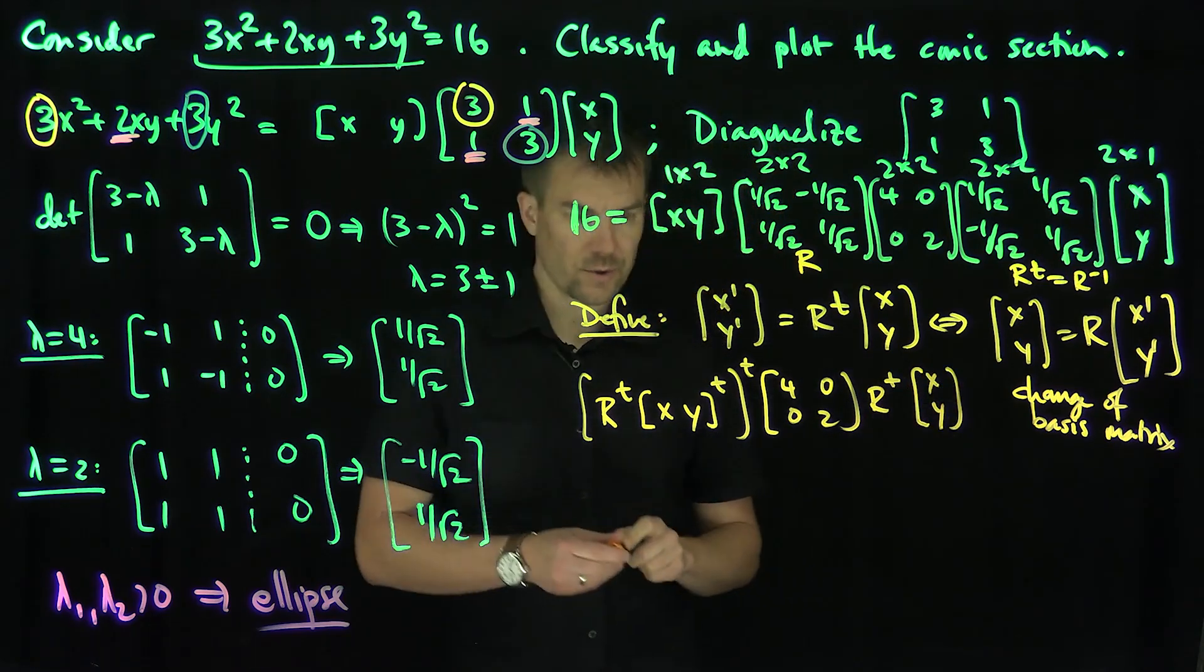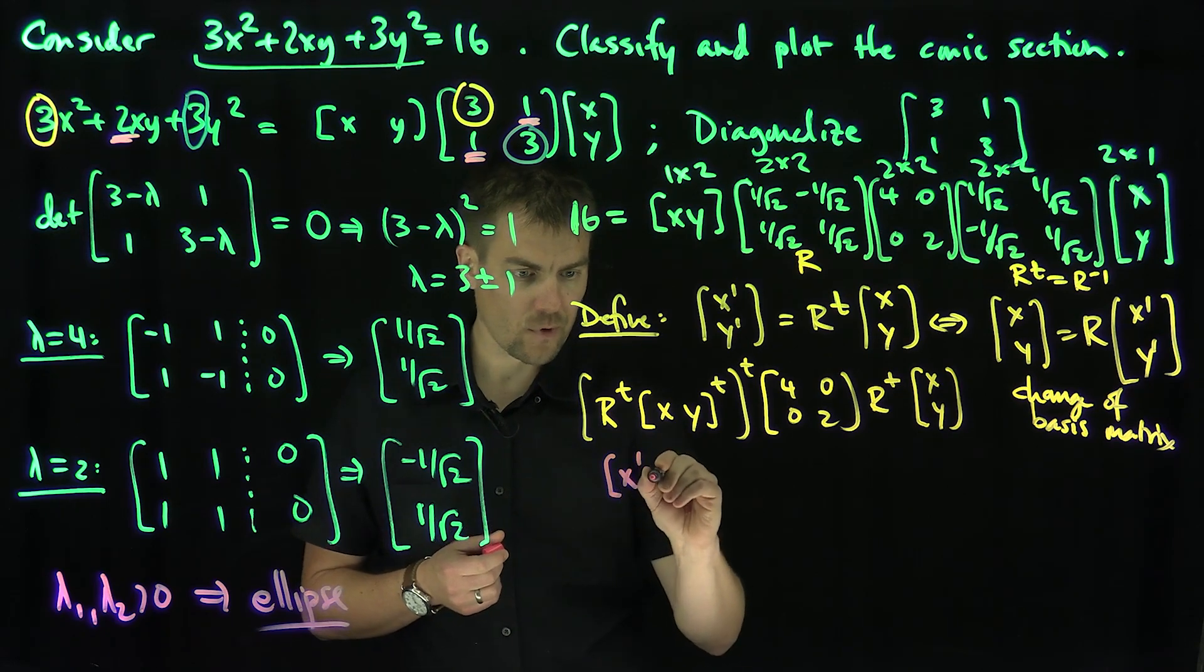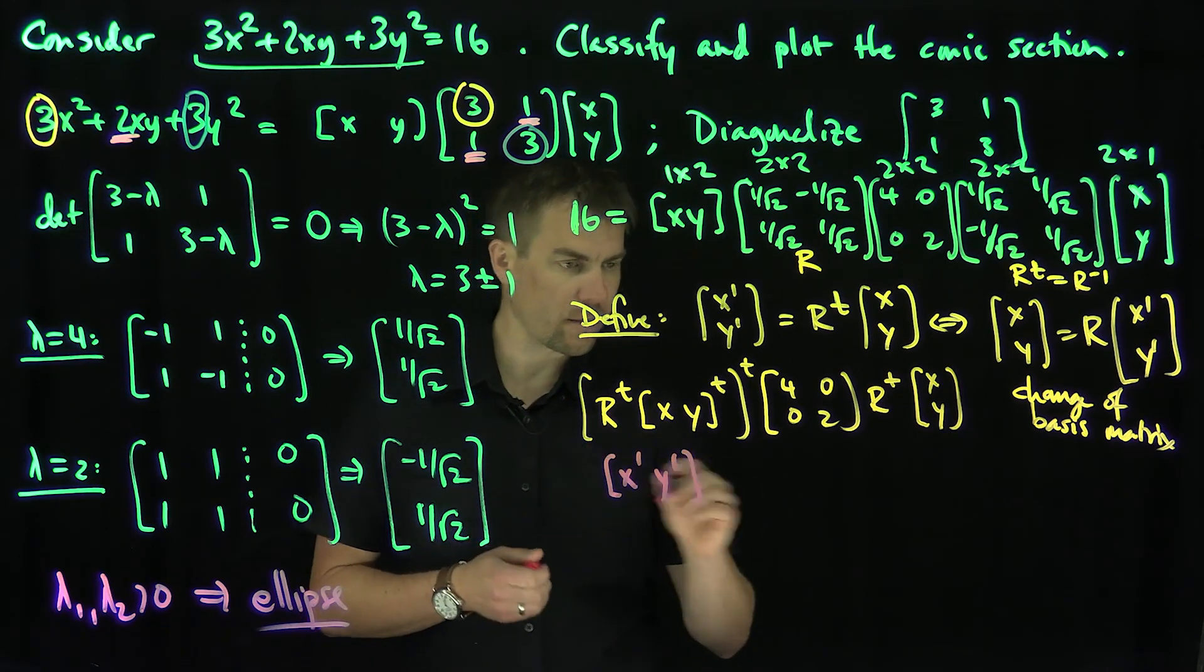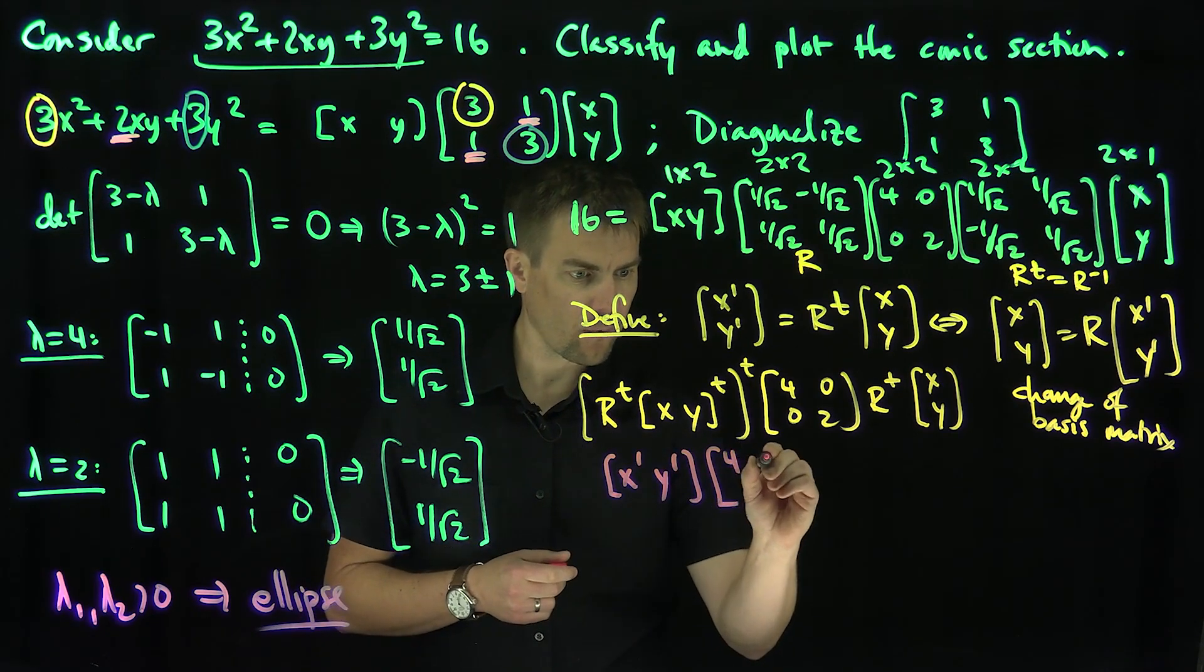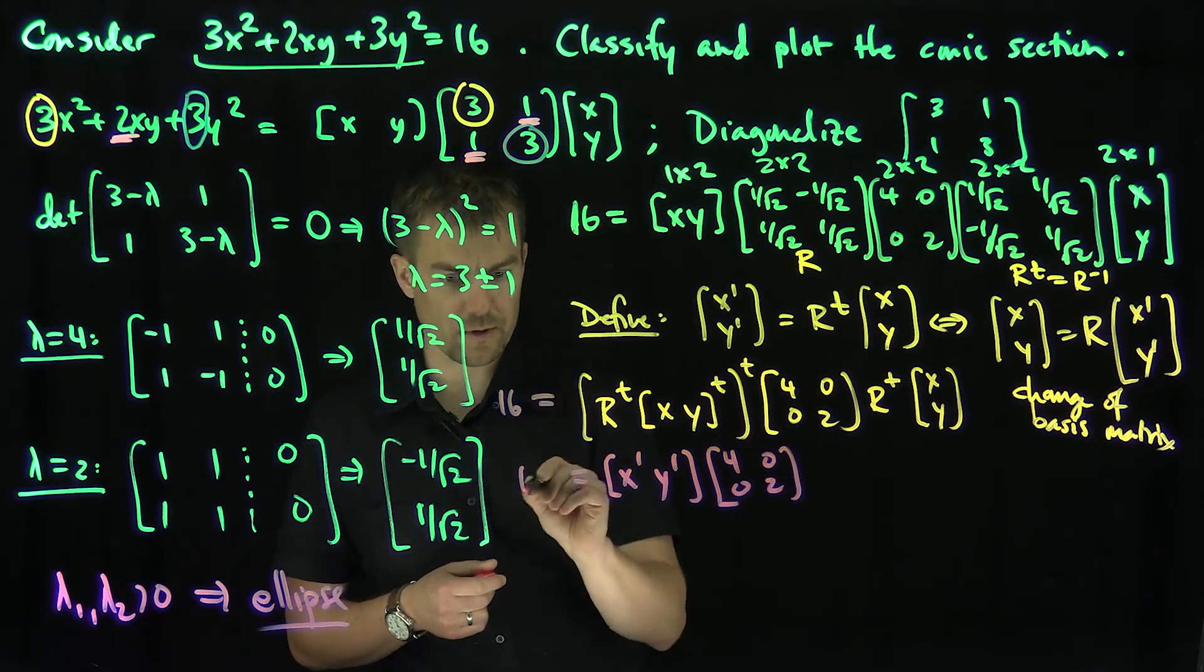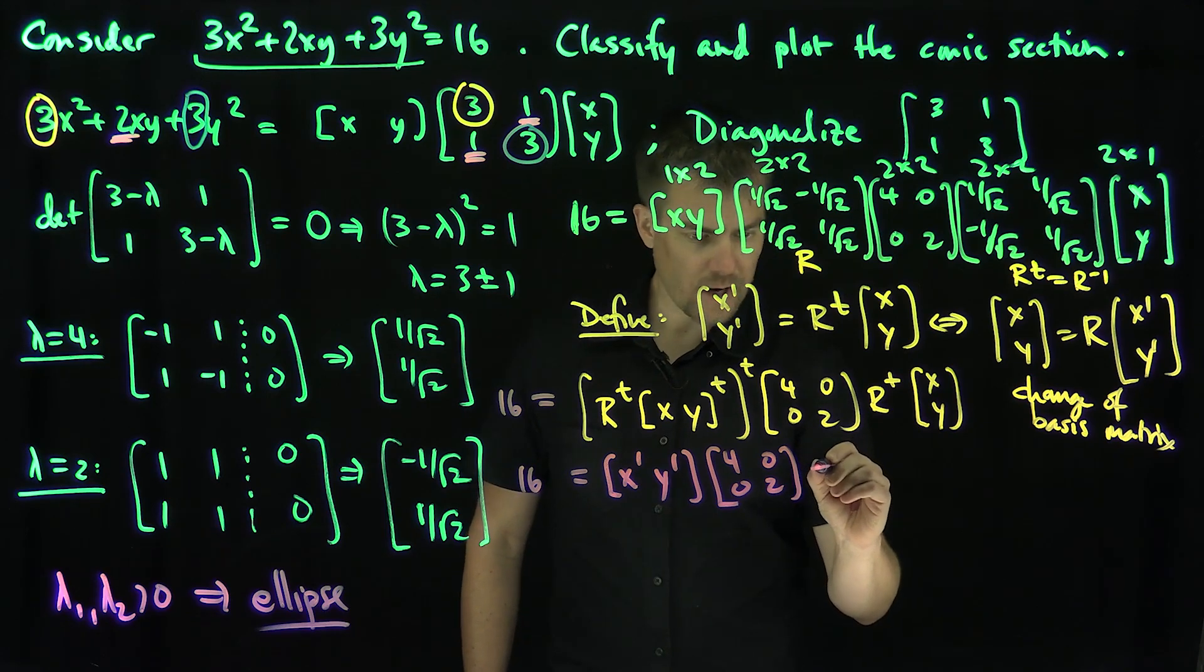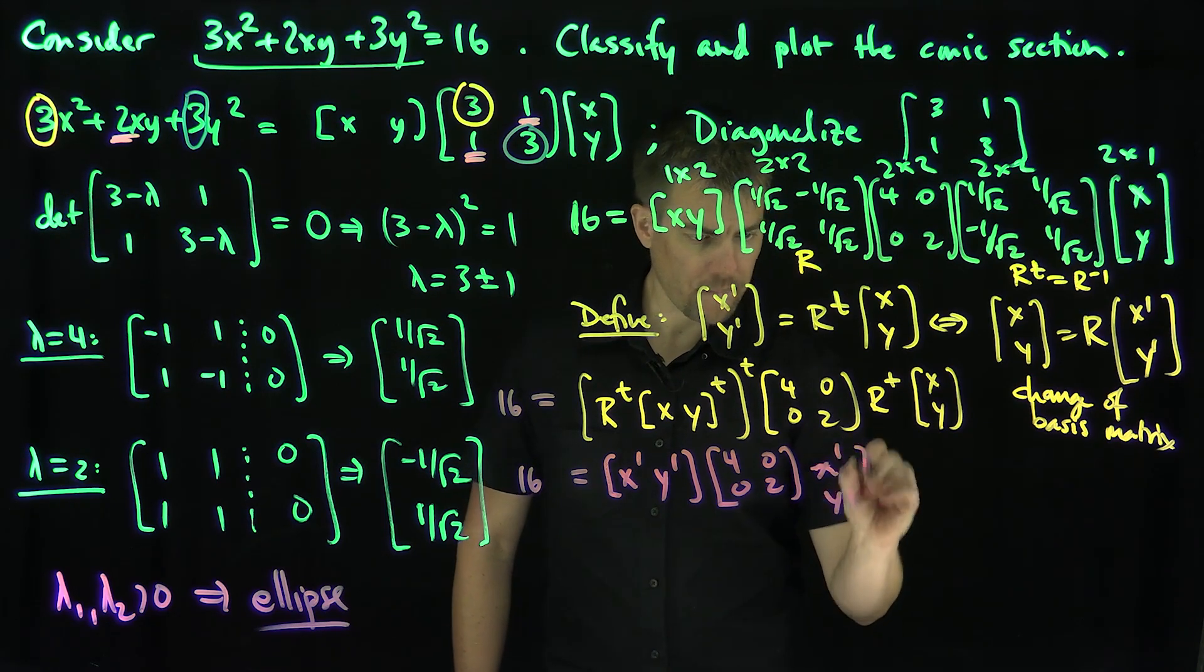And so everywhere, what do I have? This is going to be x'y' when we do the calculation, and then times [4, 0; 0, 2]. This is all equal to 16, and then times an x'y' like that. Excellent.